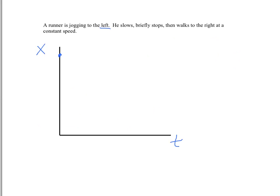So the runner starts at a certain position, and he's jogging to the left. So it doesn't say how fast he is going initially. So I'm just going to assume it's a constant speed at first. So there's him jogging to the left.